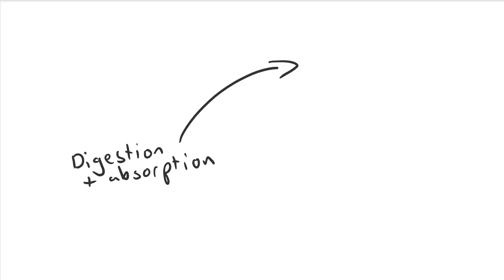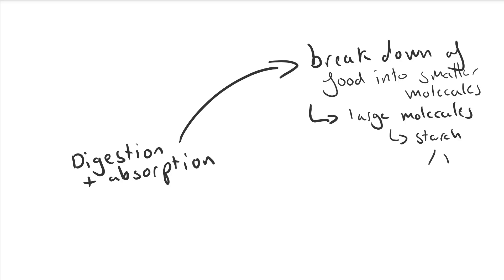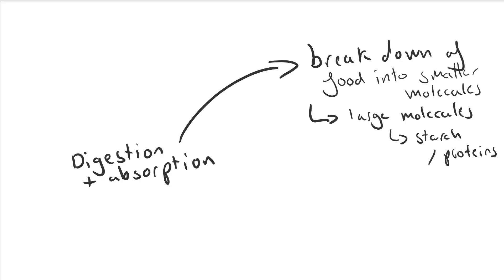Digestion and absorption is basically when large biological molecules, like starch or proteins from food which you eat, are broken down into smaller, more manageable molecules. The problem with these large molecules is they're too big to cross your cell membranes and enter your cells for use elsewhere in your body, which means they can't get from the gut into the blood.